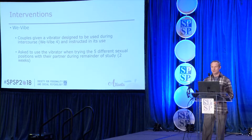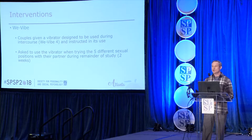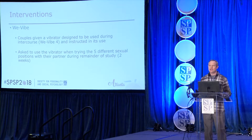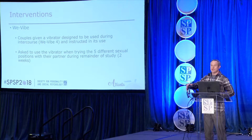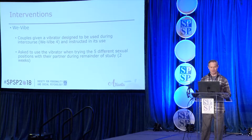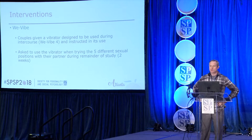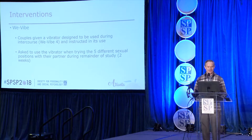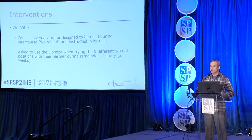In the WeVibe condition—specifically the WeVibe 4—couples were given a vibrator designed to be used during intercourse and instructed in its use. We were able to show people how to use the vibrator using anatomical models. The most interesting email I ever received was from Taylor, who said someone seemed to have stolen one of our anatomical models from the lab. We decided that if they found it, we didn't want it back. Participants were asked to use the vibrator when trying the five sexual positions over the remaining two weeks, with questions built in to assess adherence.